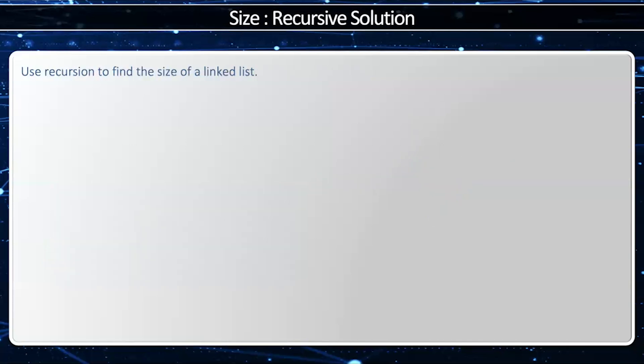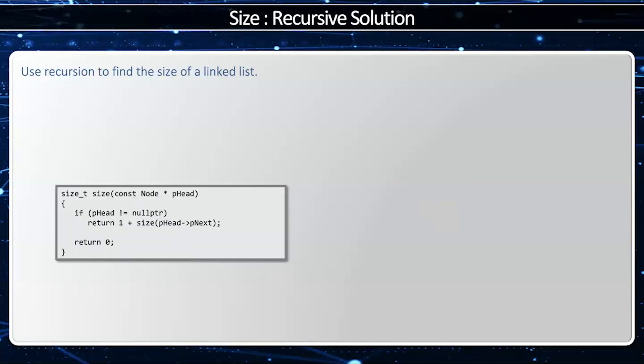Now we can also do this with recursion. Remember, recursion is the process of calling myself. I'm going to say if p head is the null pointer, I'll return zero. Otherwise, I'll return one plus the size of p head arrow p next.